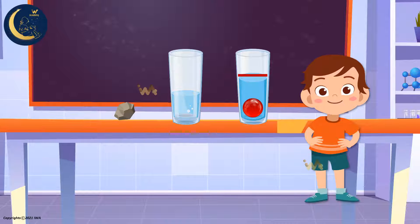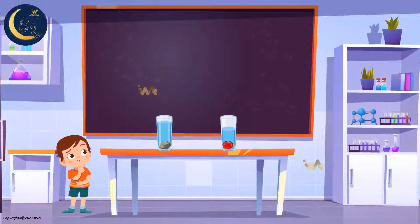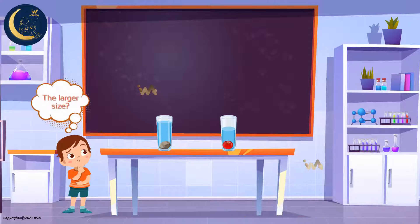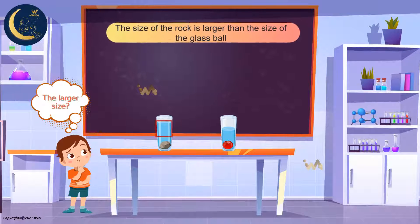Now I will get another cup and fill it with the same amount of water, but this time I'll put a rock inside it. Notice how much water is displaced. Can you figure out which of these materials, the rock or the glass ball, is bigger in size? Because the rock displaced more water than the glass ball, this means that the size of the rock is larger than the size of the glass ball.